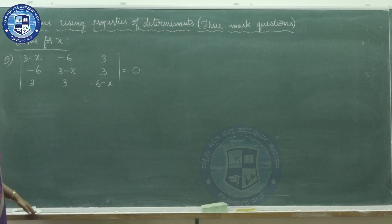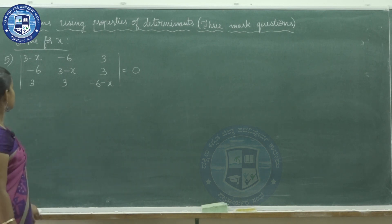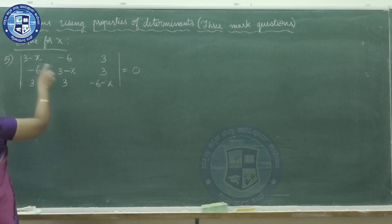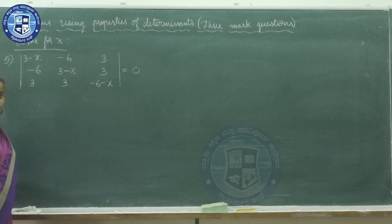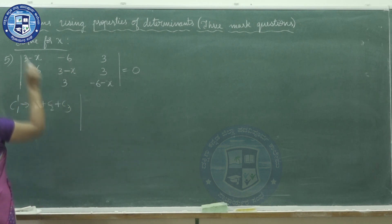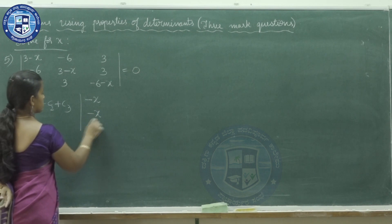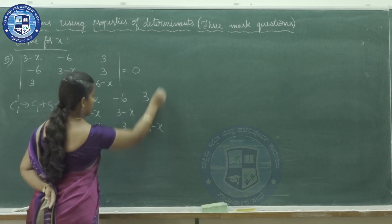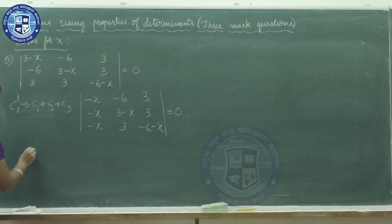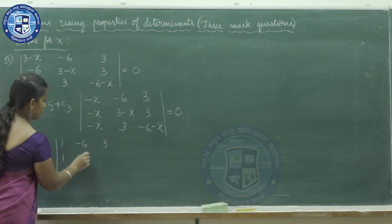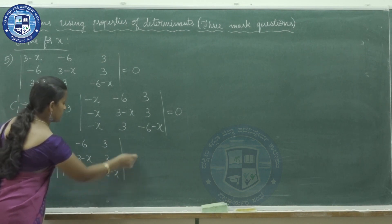Fifth problem: the determinant is 3−x, −6, 3; −6, 3−x, 3; −6, 3, 3−x... with entries 3, −6 repeating across rows and columns. We apply column 1 replaced with column 1 plus column 2 plus column 3. Adding: 3+3−6=0, so the first column becomes 0 throughout. What remains in the other two columns is −6. Factor out −6 from column 1 region; remaining entries right as is, equals 0.